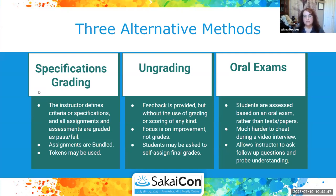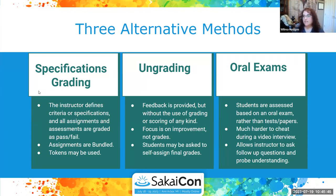Everything's pass/fail, though you might allow multiple attempts. The grade is constructed by bundling assignments — students know that if they complete everything in Bundle A they get an A, Bundle B gets them a B. Students have more agency because they can see what's required and work toward a particular grade. Tokens can be used to trade in for a second chance, a retake, or a missed assignment.